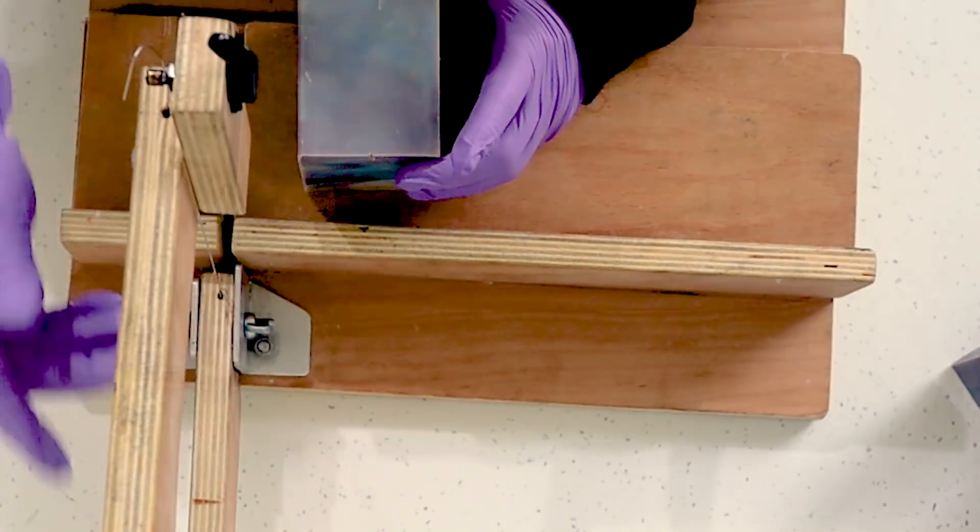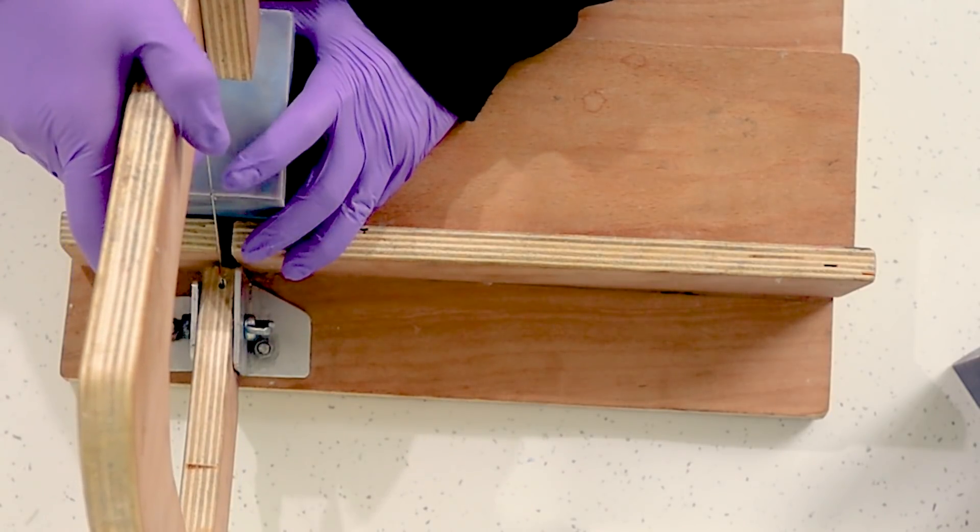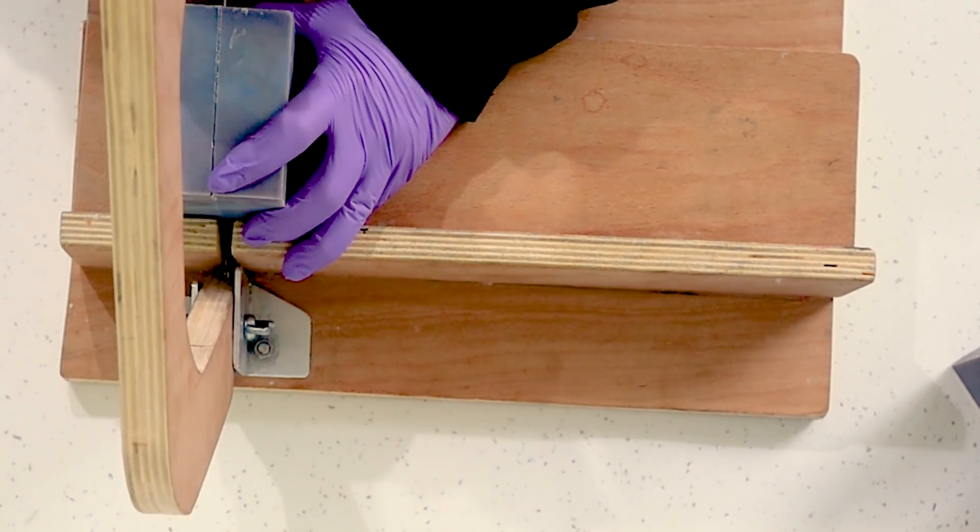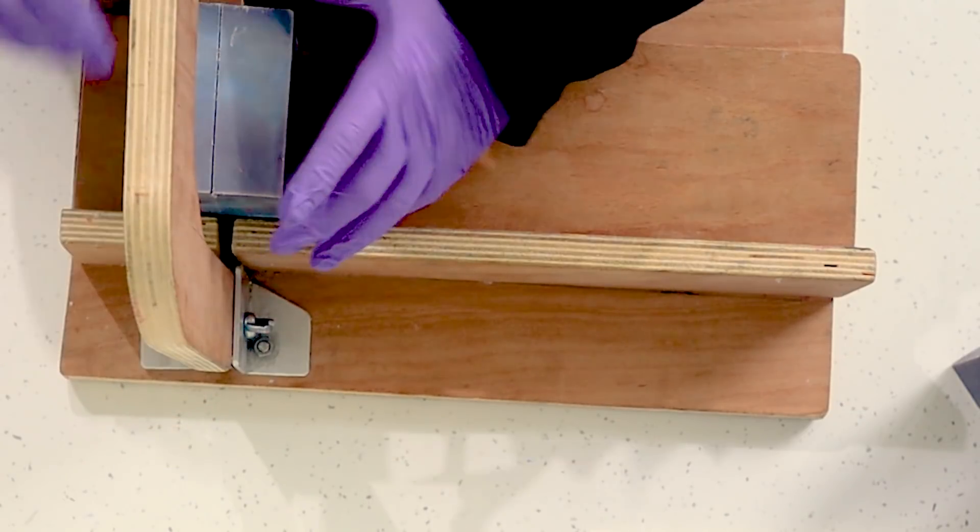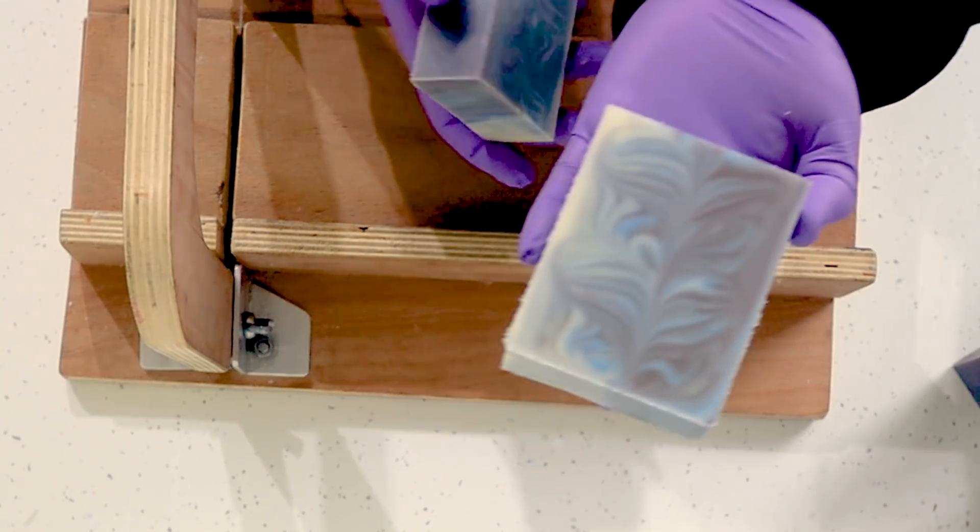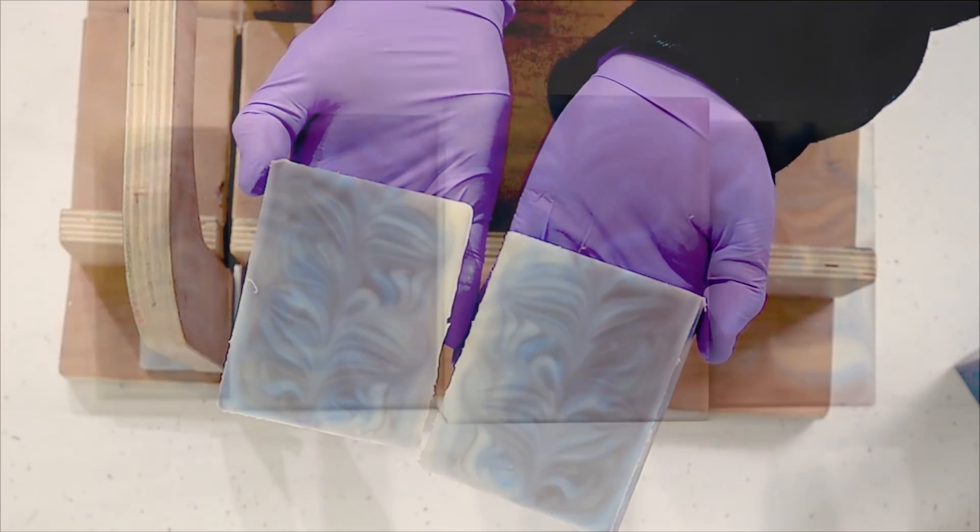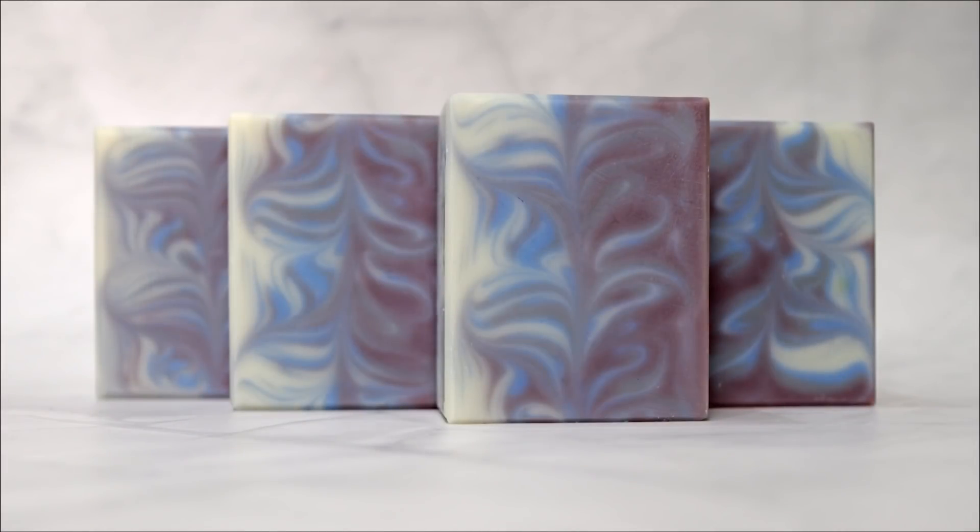And that white if you remember was just the color of the natural soap batter. There was no titanium dioxide or anything added. And then here are some final pictures of the soap. Now these photos have been taken three months after the soap was cut so as you can see with the natural colorants they're still holding up really well.